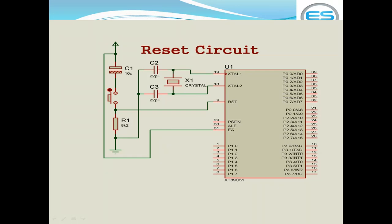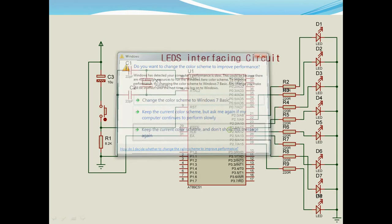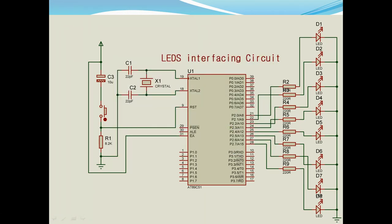These connections are mandatory for your microcontroller before proceeding with any interface — this is the reset circuit. Coming to the LED connection with the microcontroller, you can choose any one of the IO ports. There are four IO ports: P0, P1, P2, and P3. You can use one complete port for your eight LEDs, which makes programming much easier.